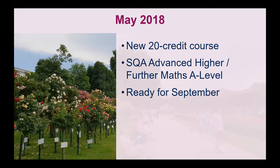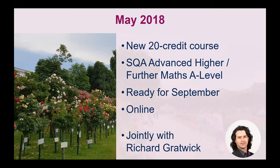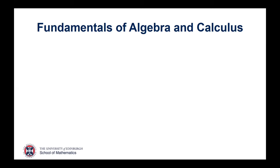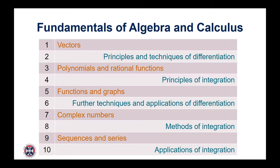The goal was to have this course ready by September, and the steer was that it would be delivered online. So even though these were on-campus students, we hoped the course would be scalable, potentially going beyond our own School of Maths students to the wider university. It was a joint effort with Richard Gratwick, a university teacher in the school at the time, and we were fortunate to have lots of input from colleagues. The course ended up being called Fundamentals of Algebra and Calculus, with 10 weekly topics — five loosely on algebra and five on calculus, alternating each week.